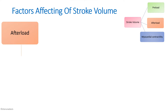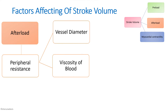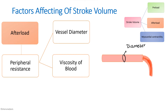The second factor affecting stroke volume is afterload. In case of the heart, afterload is peripheral resistance — the load that acts on the muscle once contraction begins. Peripheral resistance depends on two factors: vessel diameter and viscosity of the blood. If vessel diameter is greater, peripheral resistance is less; if blood viscosity is less, peripheral resistance is also less.